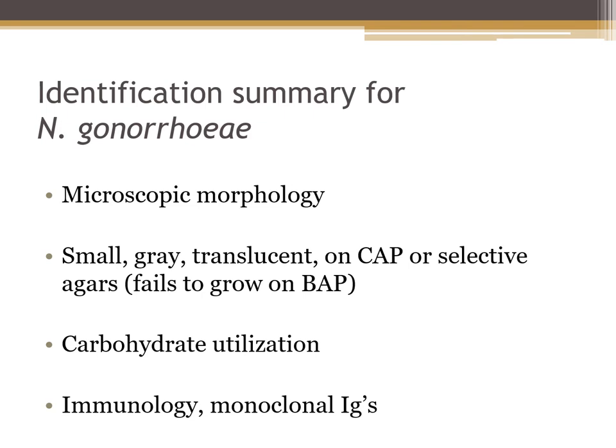To identify Neisseria gonorrhoeae: look at microscopic morphology — is it a gram-negative diplococci? Does it grow on blood? Neisseria gonorrhoeae should not grow on blood but should grow on chocolate and modified Thayer-Martin. On chocolate agar, it's small, grayish or tannish, and translucent. It fails to grow on blood agar. In the CTA sugars, it is glucose positive. We can also do immunology or monoclonal antibody testing, as well as Bactocard enzyme substrate tests or fluorescent-labeled monoclonal antibody tests.